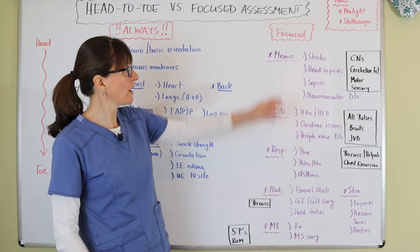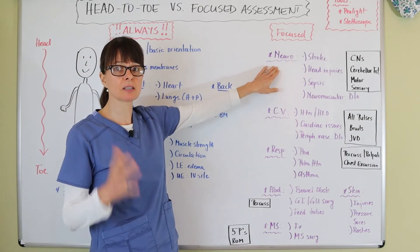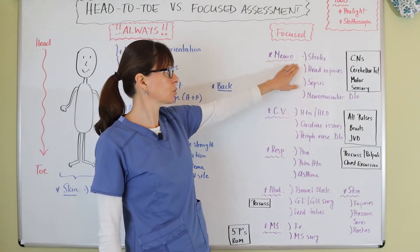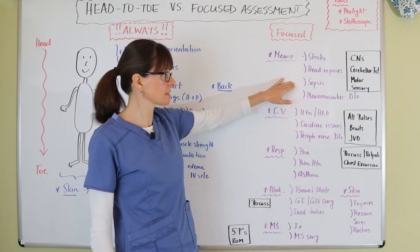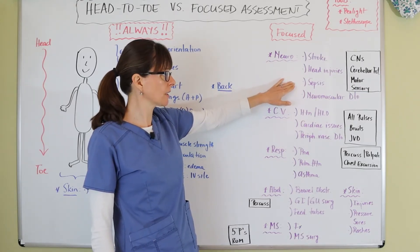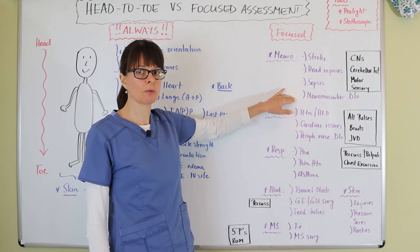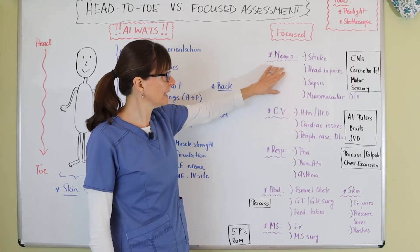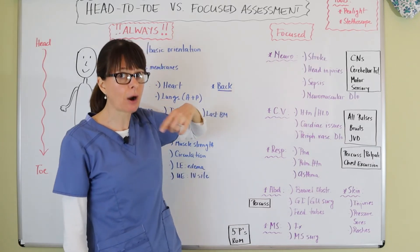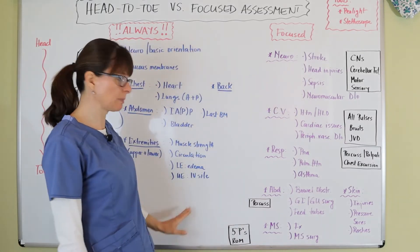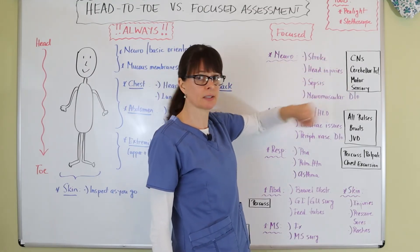When we have a focused assessment for a neurological problem — examples include a stroke, head injury, patient with sepsis because they might have altered mental status, or any kind of neuromuscular disorder such as myasthenia gravis or Guillain-Barré syndrome — then in addition to the basic things, we need to focus more on the neurologic system by also assessing their cranial nerves, their cerebellar function, and motor and sensory systems.